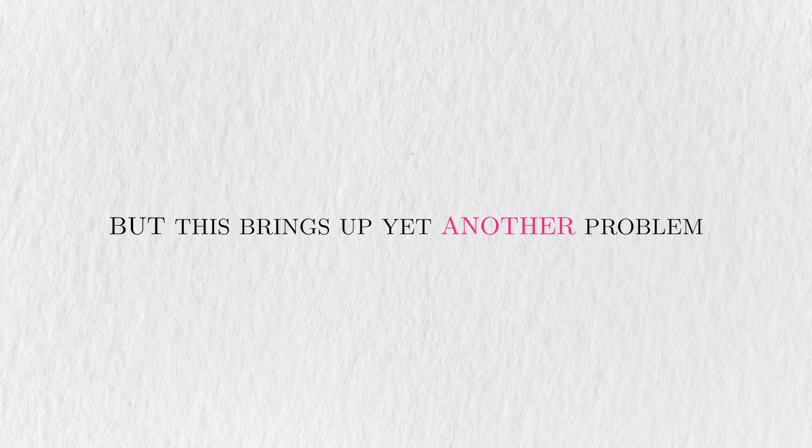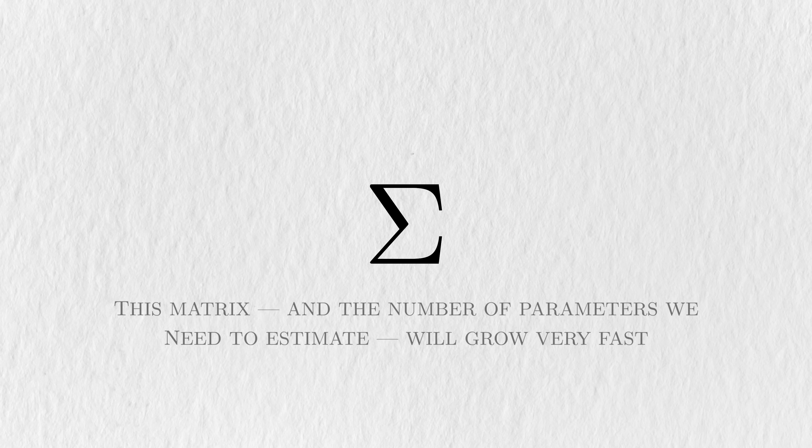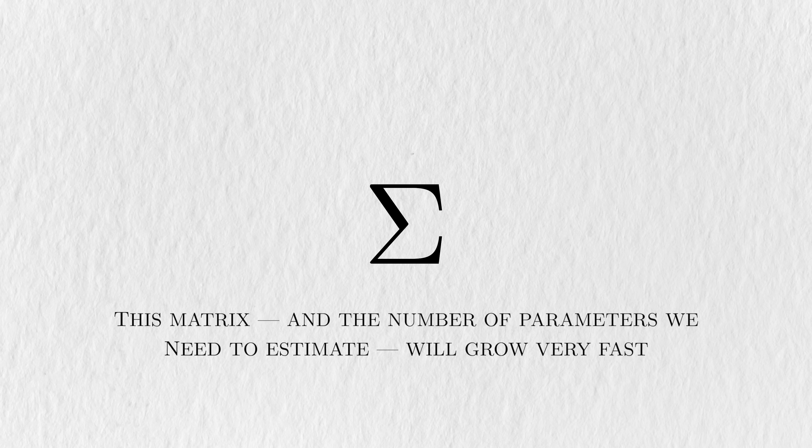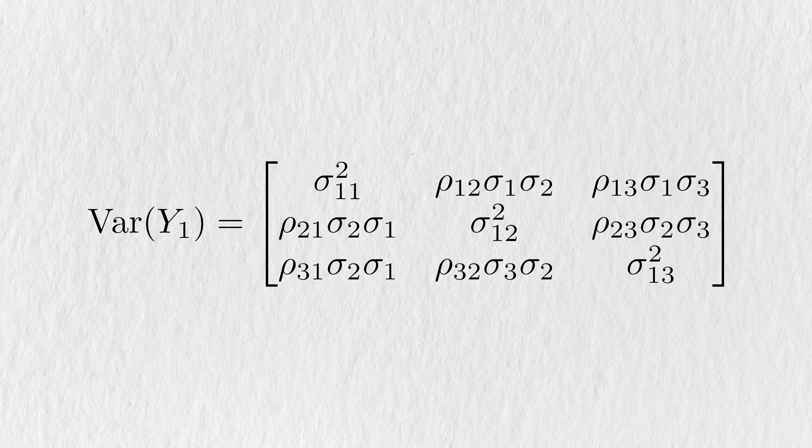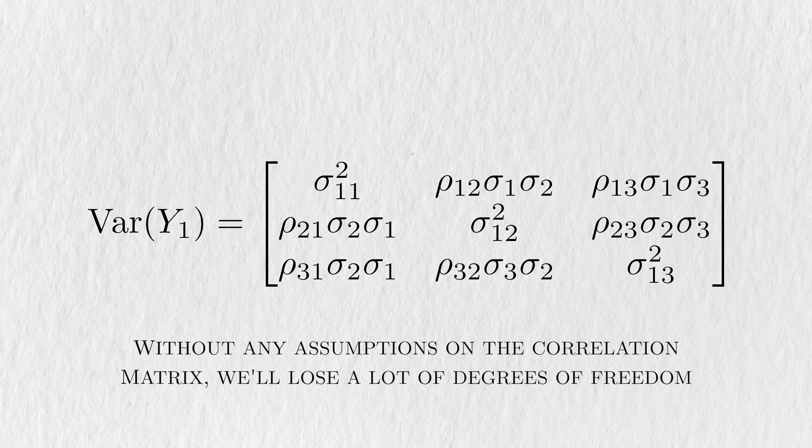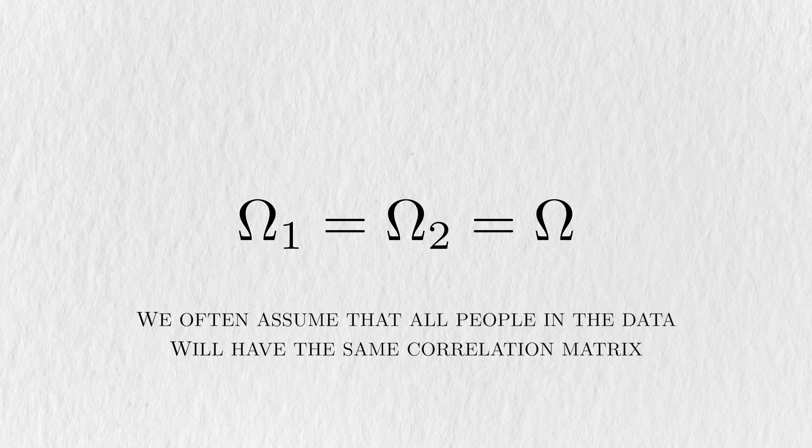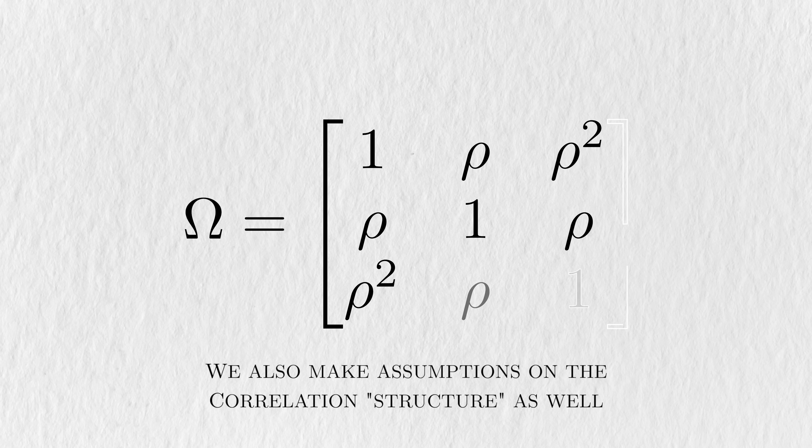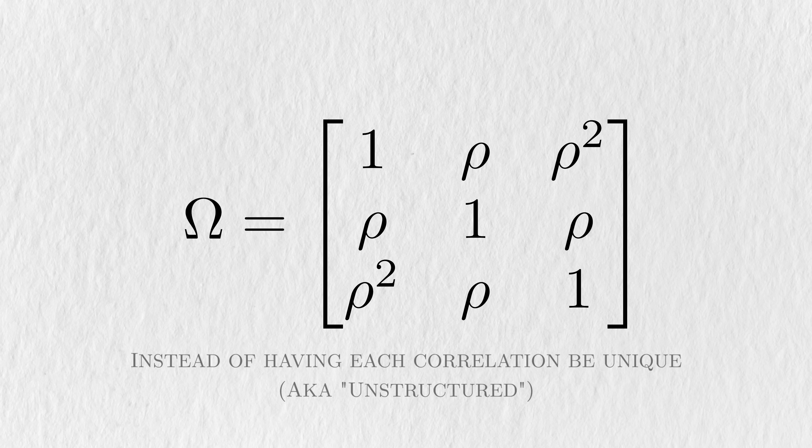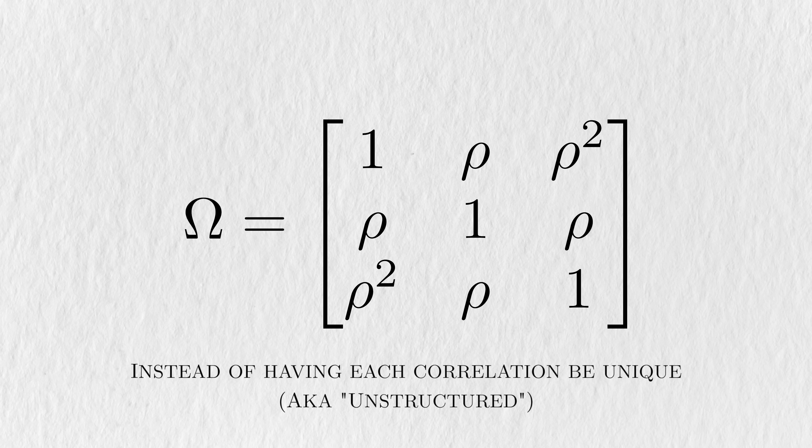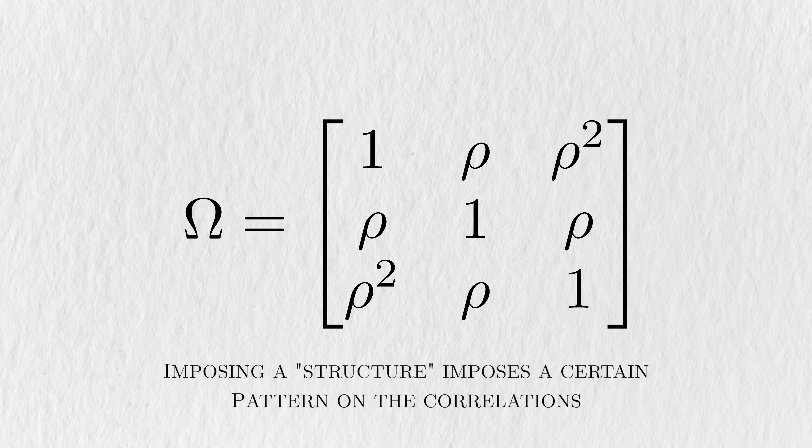But this brings up yet another problem. Depending on how many observations each person has, this matrix and the number of parameters we need to estimate can grow really large. In our specific case, we have three observations per person, so there are three unknown correlations. But for a more general case, if we make k observations per person, then we need to estimate k times k minus 1 over 2 correlation parameters. And this is just per person too. Without any assumptions on the correlation matrix, we'll quickly lose all of our degrees of freedom and lose substantial power with the model. So we often assume that every person in the data has the same correlation matrix. Furthermore, we also make assumptions on the correlation structure as well. Instead of having each correlation be unique, a so-called unstructured correlation, we may further assume that the correlations follow a particular pattern.